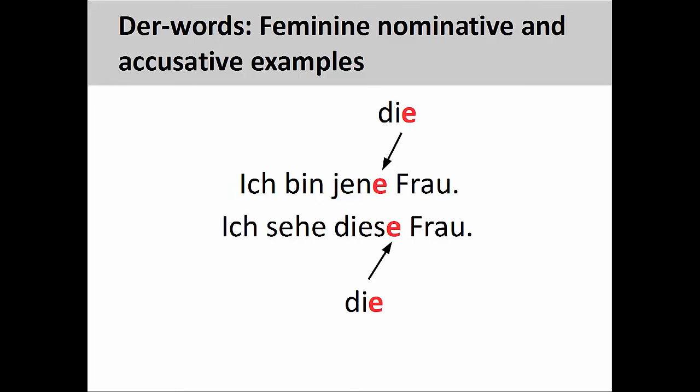Let's take a look at the feminine forms. In the first sentence, ich bin jene Frau (I am that woman), you can see that the -e ending on jen resembles the feminine definite article in the nominative case. In the sentence right below, ich sehe diese Frau (I see this woman), the -e ending on dies looks like the feminine definite article in the accusative case.